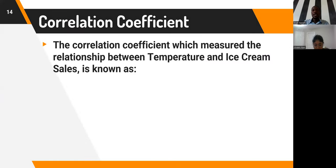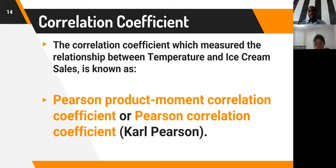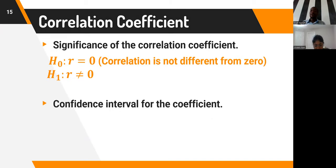The correlation coefficient measuring the relationship between temperature and ice cream sales is known as the Pearson product-moment correlation coefficient, or simply the Pearson correlation coefficient, coined by the statistician Carl Pearson. R by default calculates the Pearson correlation coefficient.